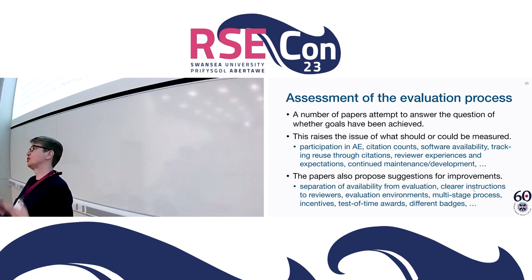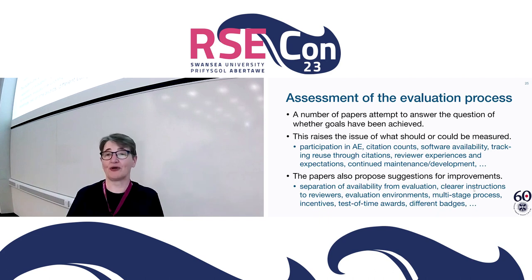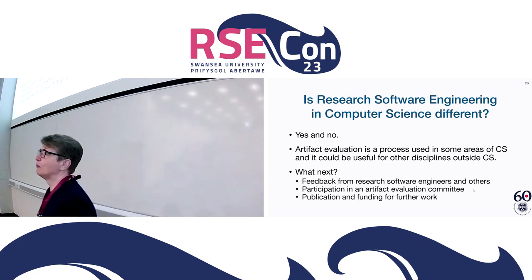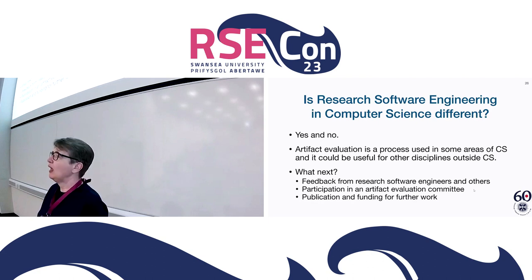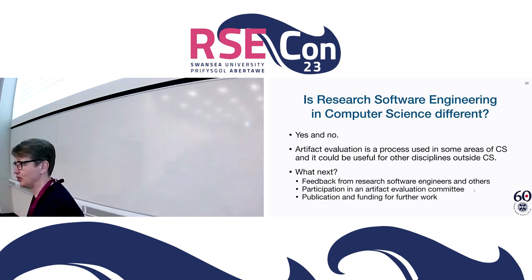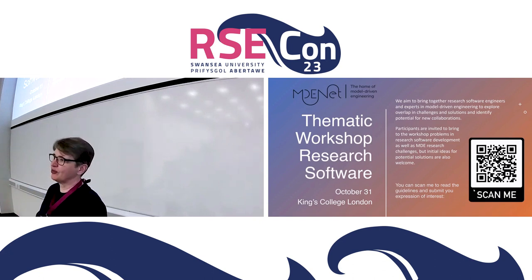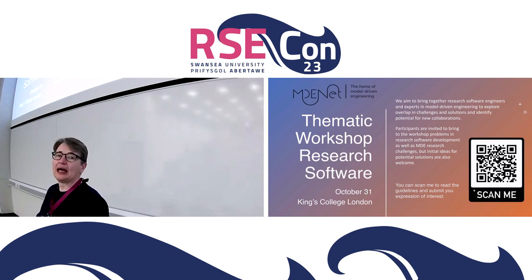In preparing this presentation I created two bibliographies considering these questions; I read a lot of papers and they're available at the end of the slides if you're interested. To summarize: is it different? Yes and no. But computer science has an interesting process called artifact evaluation that could be useful. Also, computer science is where research into software engineering takes place — people in the software engineering community are interested in talking with those who develop research software. There is a research workshop coming up with funding to attend, so please let me know if you'd like to hear more.